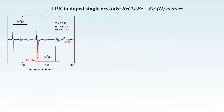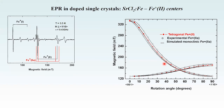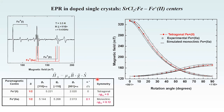Looking again at the EPR spectrum, we concentrate now on two intense lines with smaller satellite lines. Their angular dependence and the g-tensor principal values demonstrate that we have trigonal and monoclinic symmetry of the two related centers. For lower symmetry, there are more inequivalent orientations of the defect, and we produce more EPR lines with complicated patterns in angular variation.